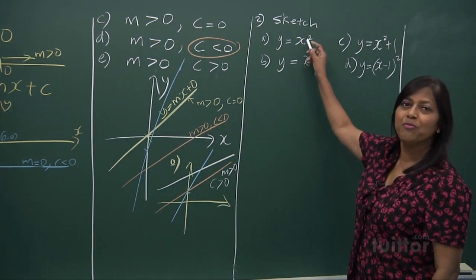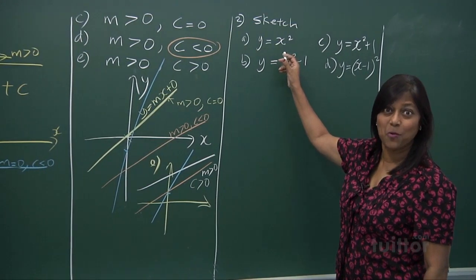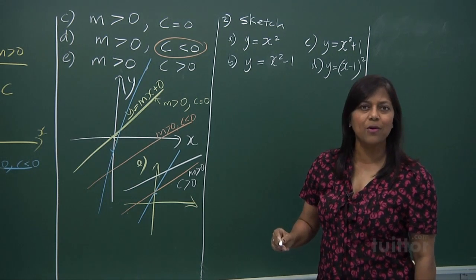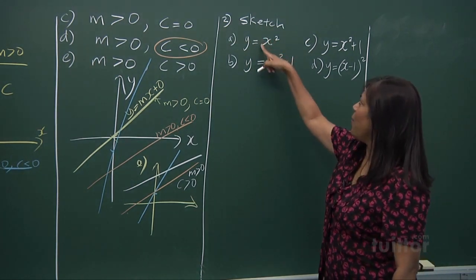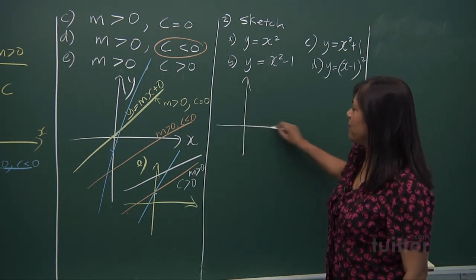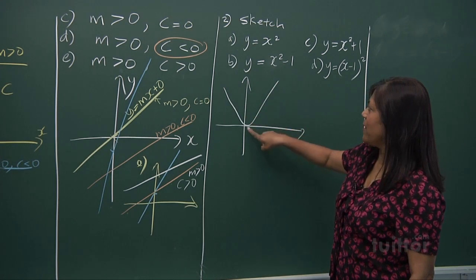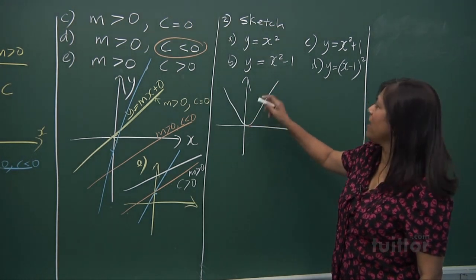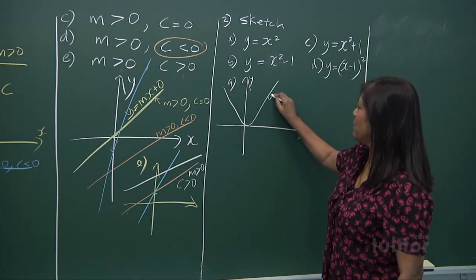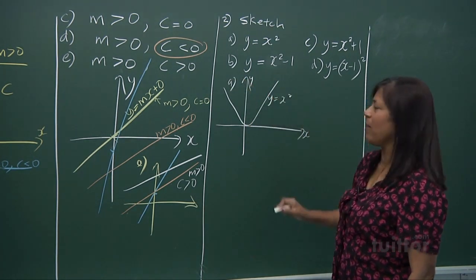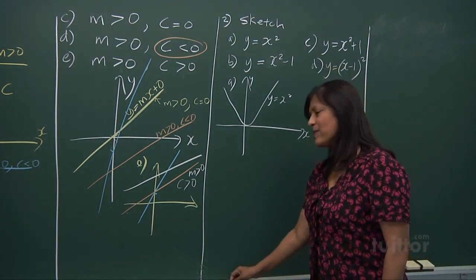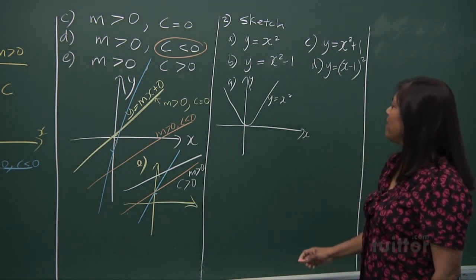Now let's look at a sketch of this graph. Do you remember? It's a quadratic equation. Is it a smile or is it a frown? It is a positive one, so it is a smile. The shape of the graph will be like this. When x is 0, y is 0. This is y equals x squared. If you look at the next one, you have x squared plus 1. How does the graph look?